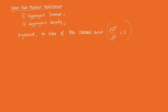While the short-run market supply curve — the partial of QS with respect to P — is generally positive, because a firm is willing to supply more if the price is higher.